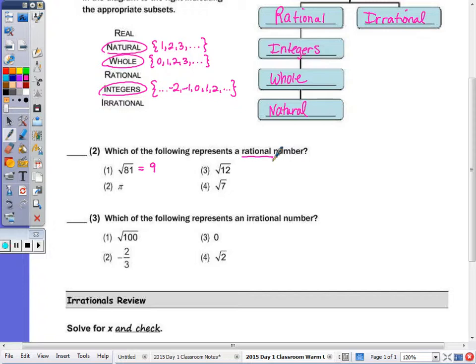And then if I look at pi, pi is a non-terminating, non-repeating decimal. And then when it comes to radicals, the square roots of non-perfect squares are irrational.